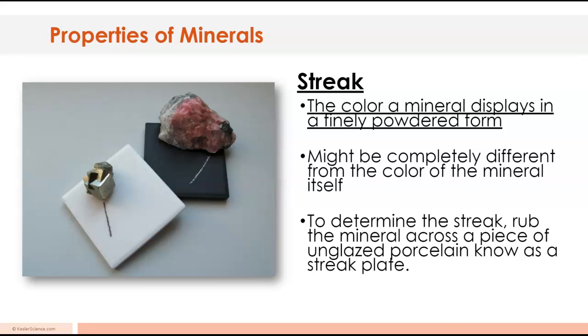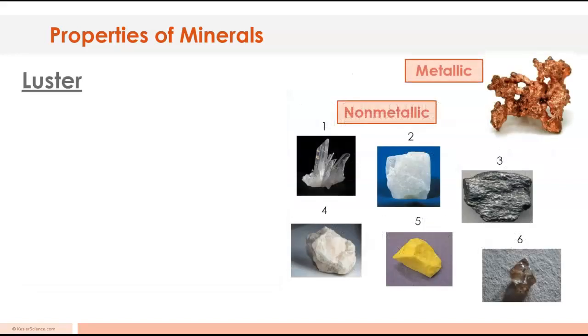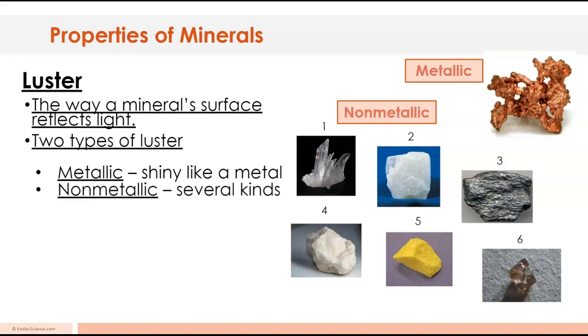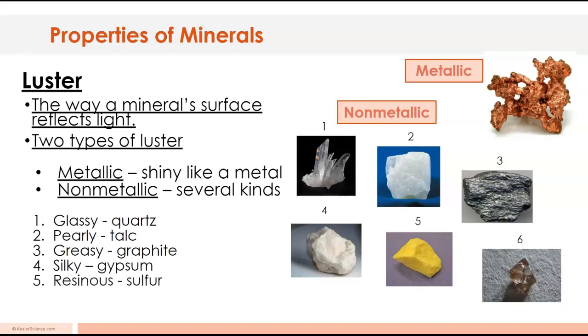Next up is luster, shininess. It's the way a mineral surface reflects the light. There's two main types of luster: metallic, which means it's shiny like metal, and non-metallic. There's a bunch of kinds of non-metallic luster. It can be glassy like quartz, pearly like talc, greasy like graphite that's in pencils, silky like gypsum, resinous like sulfur, or adamantine like diamond. That's what a raw diamond looks like when it's not all polished and shined up and cut. Go ahead and hit pause and write down the definition of luster and the two types.